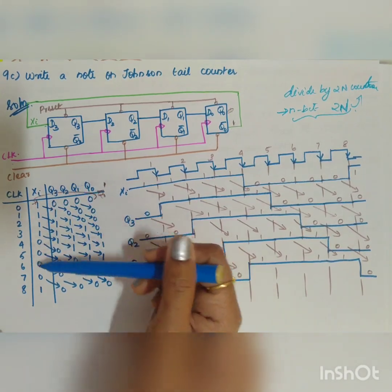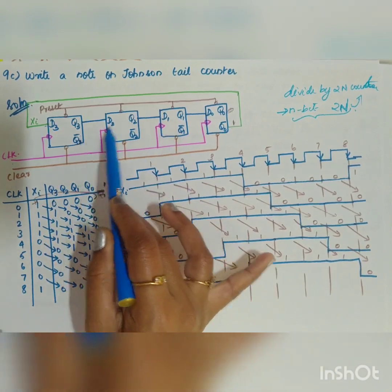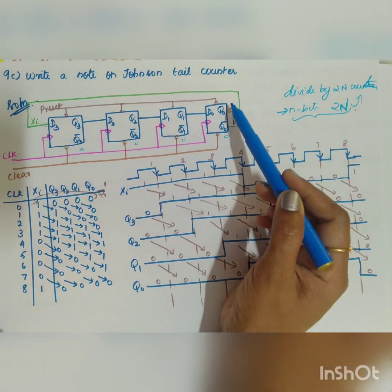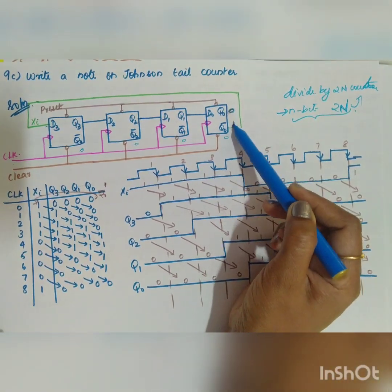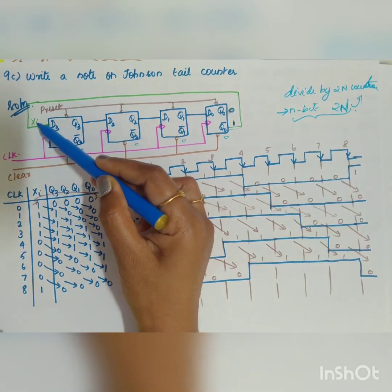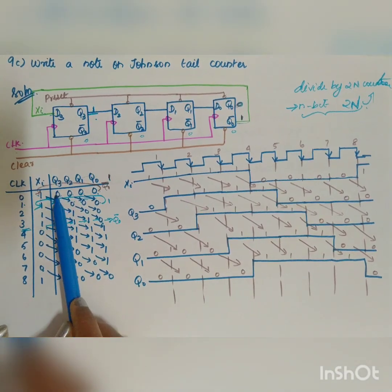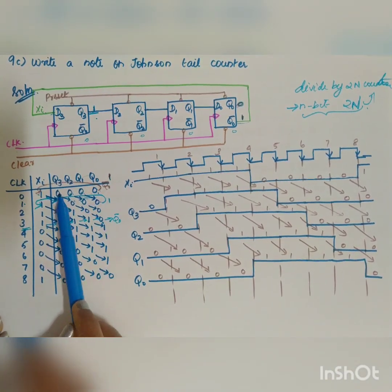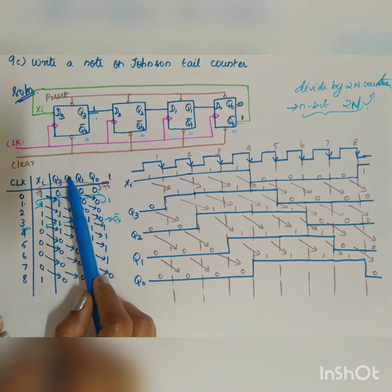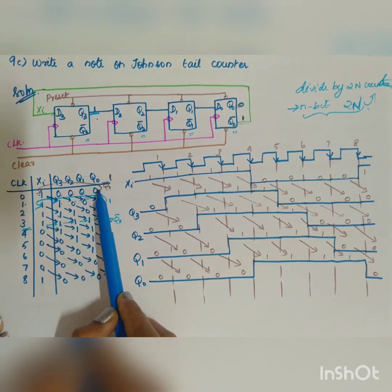Looking at the truth table: let us assume that initially the output of all the flip-flops is equal to 0, so Q0 equals 0. Therefore Q0 bar will be 1, which will be fed to the serial input Xi. So initially, all the contents of the register are 0000. During the first clock pulse, Q0 bar will be shifted in.